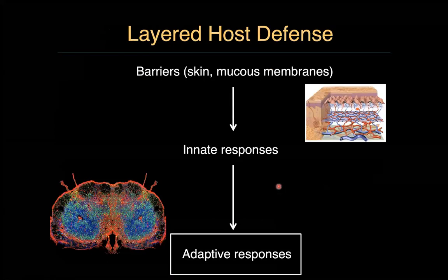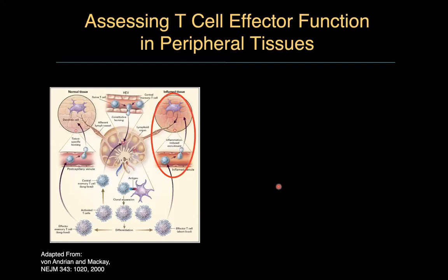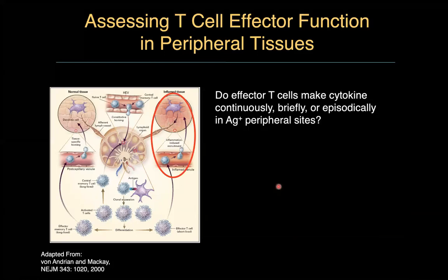Let me move from innate to adaptive responses. This is a diagram I've shown for many years from Louis van Andrian and Charles Mackay. I want to focus on moving from what's happening in the lymph node environment to effector cells. Almost all lymphocytes think of effector cells as dots on flow plots — they're in the upper left or lower right quadrant and they make interferon-gamma, IL-17, or IL-4 — but these analyses don't answer the key questions.